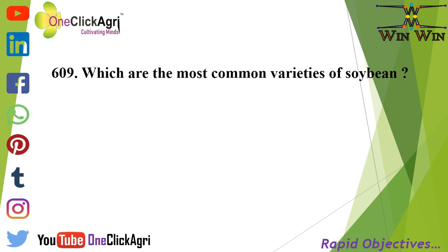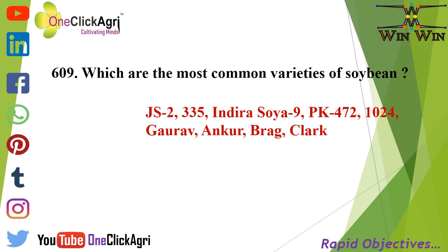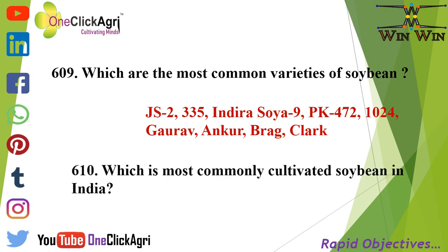Seed rate of soybean is 75 to 80 kg per hectare. The most common varieties of soybean are JS-335, Indira Soya 9, PK-472, 1024, Gaurav, Ankur, Prague, and Clark. The most commonly cultivated soybean in India is yellow colored soybean.